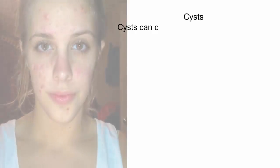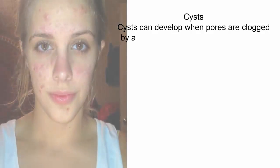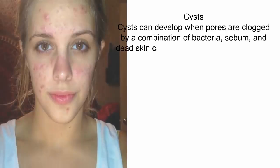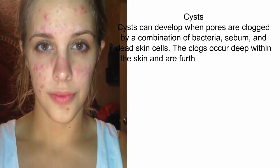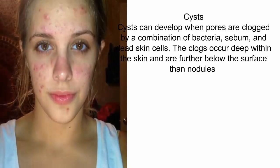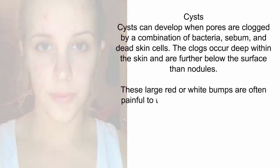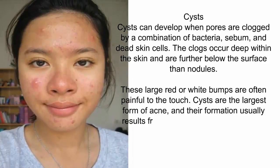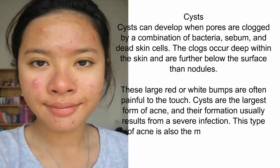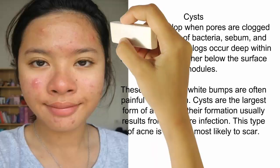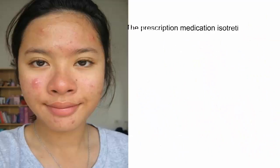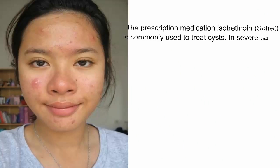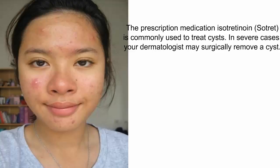Cysts can develop when pores are clogged by a combination of bacteria, sebum, and dead skin cells. The clogs occur deep within the skin and are further below the surface than nodules. These large red or white bumps are often painful to the touch. Cysts are the largest form of acne, and their formation usually results from a severe infection. This type of acne is also the most likely to scar. The prescription medication isotretinoin is commonly used to treat cysts. In severe cases, your dermatologist may surgically remove a cyst.